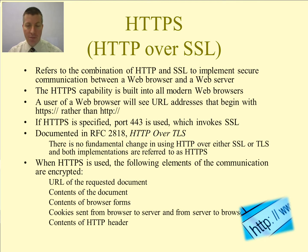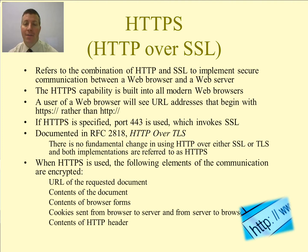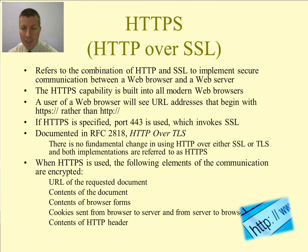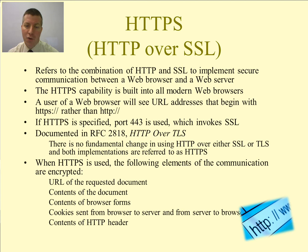If you utilize HTTPS, this is running at the application layer. You are going to be encrypting the URL of the requested document, the contents of the document, the contents of the browser forms, cookies that are sent, and the contents of the HTTP header — so it is encrypting nearly everything in the HTTP message. When we utilize HTTPS, we're going to be operating over port 443 instead of port 80, which is the HTTP port. Make sure that you see HTTPS in the URL instead of just HTTP. Some browsers, such as Google Chrome and Firefox, may drop the protocol from the front; however, they have a little padlock right next to the URL if you're communicating over HTTPS.